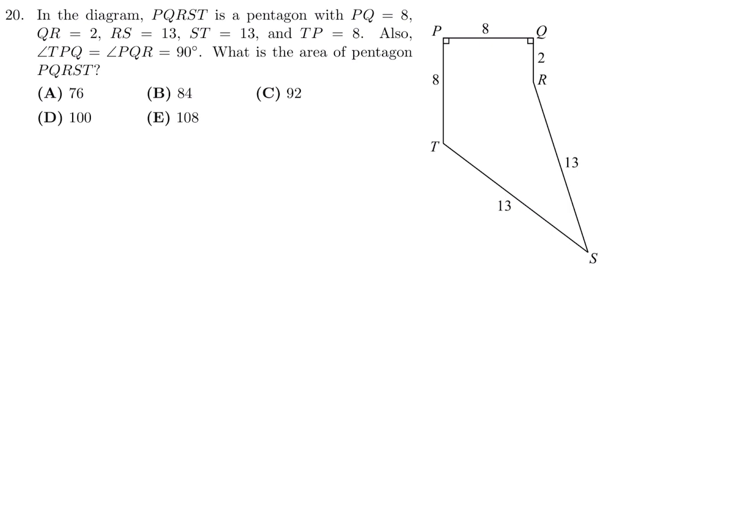In the diagram, PQRST is a pentagon with PQ is 8, QR is 2, RS is 13, ST is 13, TP is 8. Also, angle TPQ and angle PQR are 90 degrees. What is the area of the pentagon? We will break up this pentagon into a few sections. The first one, that rectangle, then this triangle, and then the other triangle. And I will draw one more line that is going to hit there at a right angle. Now at this point, I think it should be fairly straightforward to figure out the area.